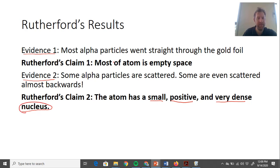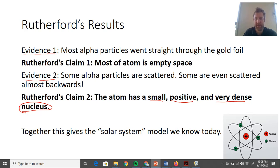Putting those two claims together—that most of the atom is empty space and the atom has a small, positive, very dense nucleus—you get the solar system model we know today, with the nucleus in the center and electrons orbiting it.